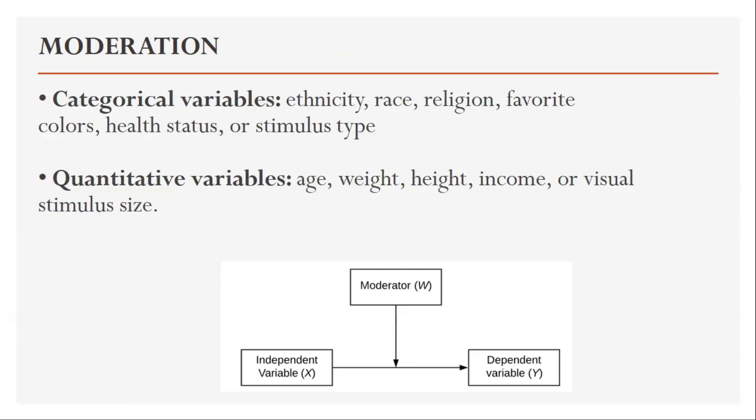Moderating variables can take the following forms. They can be categorical variables such as ethnicity, color, or religion, or health status. They can also be quantitative variables such as age, weight, height, or income. These are the two major types — categorical and quantitative — in which moderating variables can exist.